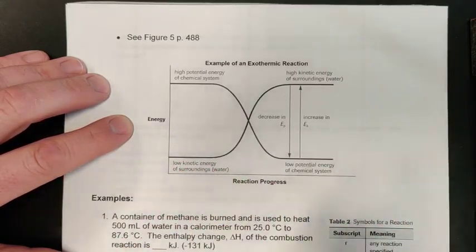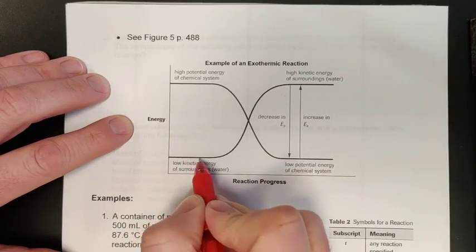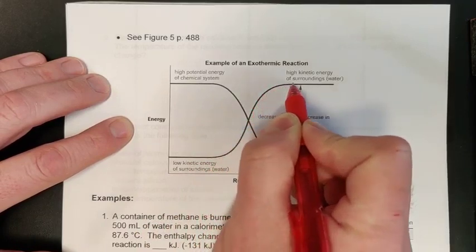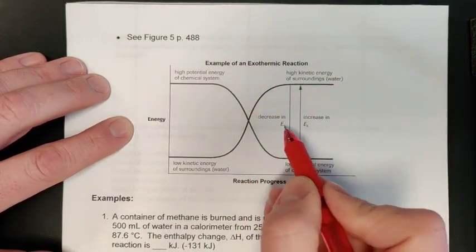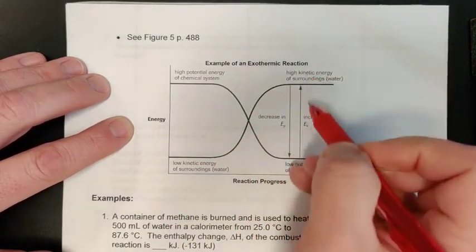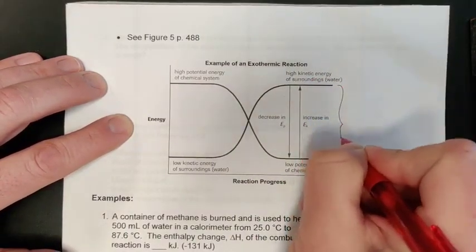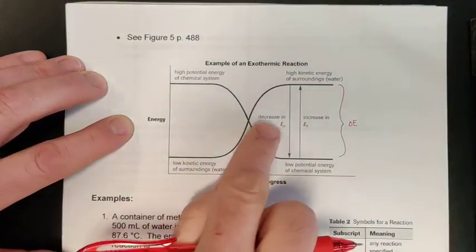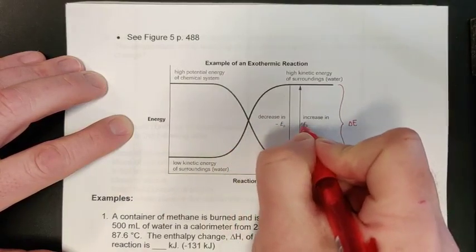The calorimeter is specifically designed to give the reaction somewhere to put that lost energy. The surroundings or the water that makes up the solution in your calorimeter would start at a low temperature, and as the energy is lost by the reaction it goes into the water, increasing its thermal energy. We would see a temperature increase and higher particle motion. You'll notice that these two bundles of energy or this change in energy that we see between the two is the same.